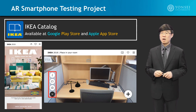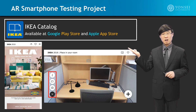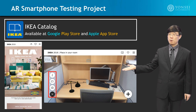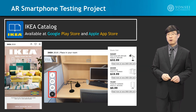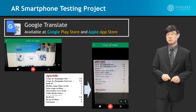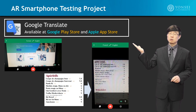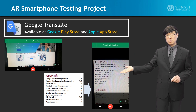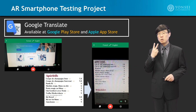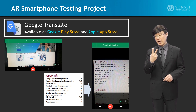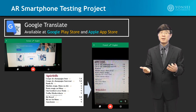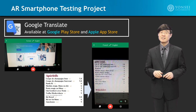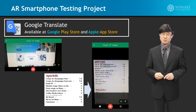We will then go into a project with the Ikea catalog, in which we will download an application and do some experiments focusing on various types of applications. Then we will do a project with Google Translate, where we will look into various modes and do testing. We will use these two augmented reality applications to see the limits as well as potential functions and features of the most advanced augmented reality support systems.